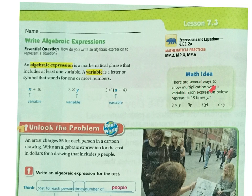Math ideas: There are several ways to show multiplication with a variable. Each expression represents 3 times Y. You can write 3 × Y, or 3Y, or 3(Y), or 3·Y. All of these mean 3 times Y.